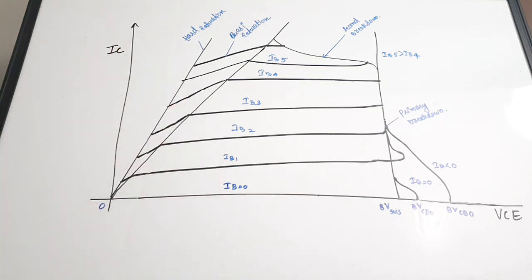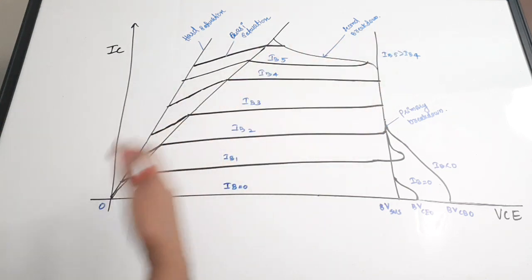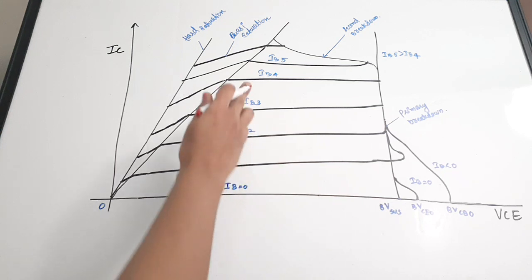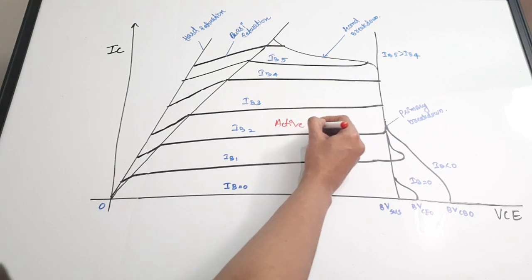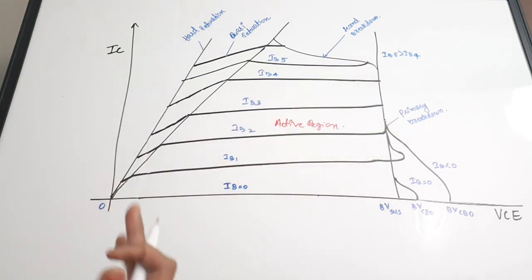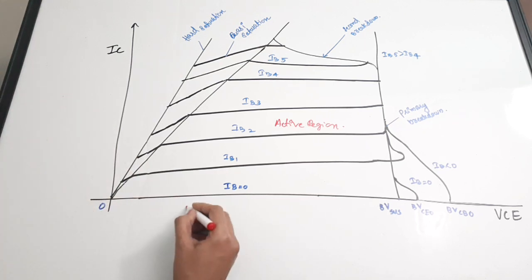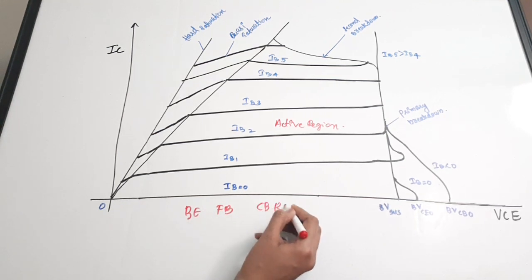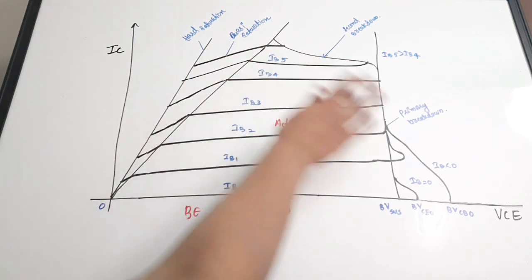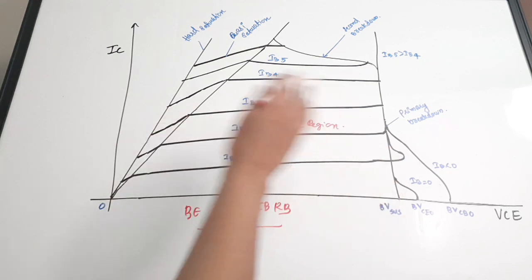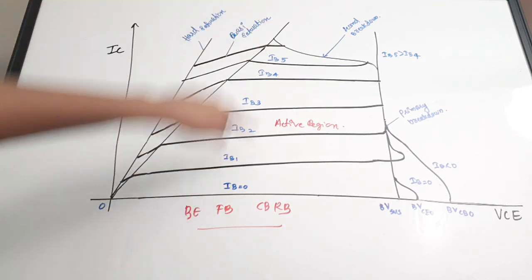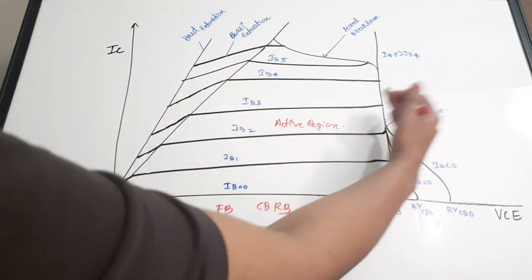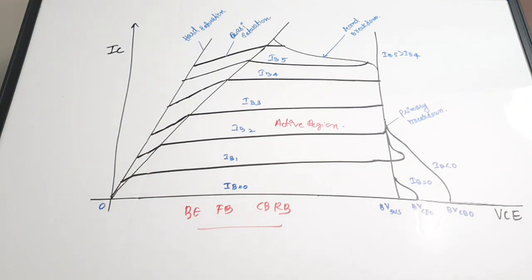The next mode is active mode. In this region you can see that there is a proportional change happening between IB values and IC values. The base-emitter junction is forward biased and the collector-base junction is reverse biased, just like for a normal BJT. The characteristics also show a parallel relation - IC increases and goes with constant values for various IB values, showing a proportional change. This region is called the active region.